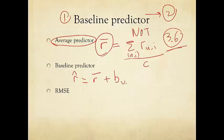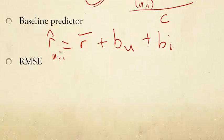So, bias terms with regard to the user and bias term with regard to the movie. R-hat U-I is the average predictor, the laziest one, plus some bias term on that user and some bias term on that movie.